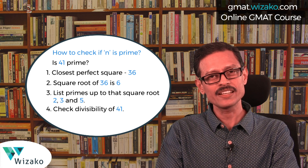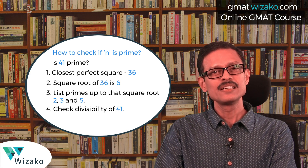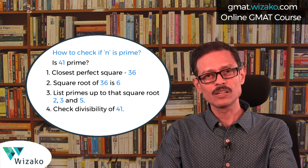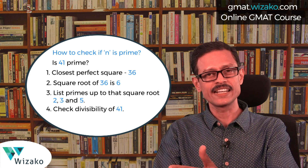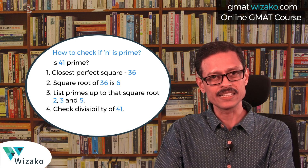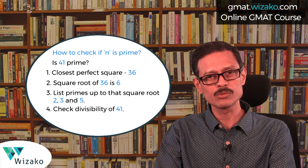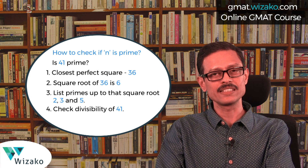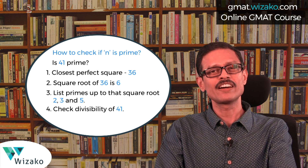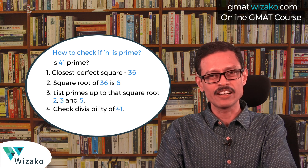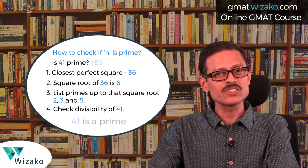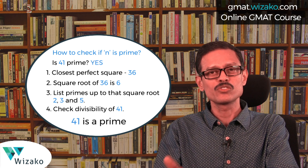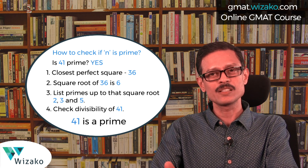2 will not divide 41 because 41 is odd. The sum of digits is 4 plus 1 equals 5, which is not divisible by 3 — that's the divisibility test for 3 — so 41 is not divisible by 3. And 5 obviously does not divide 41. So none of the primes up to 6 divide 41, meaning 41 is a prime number.